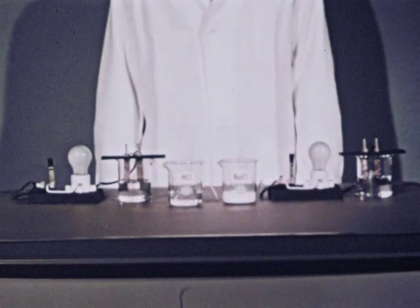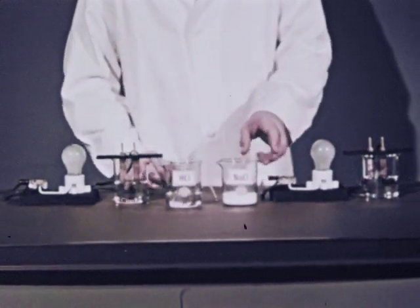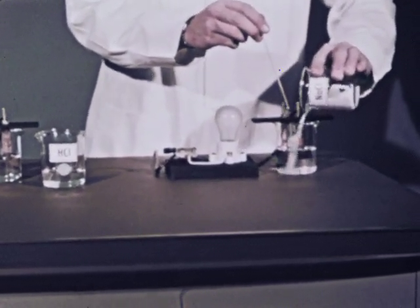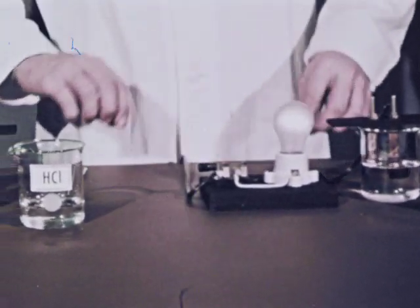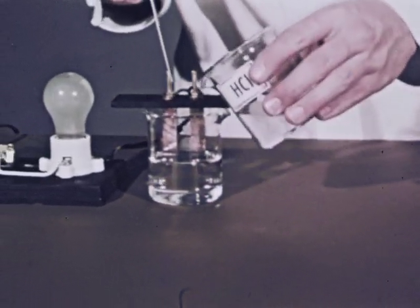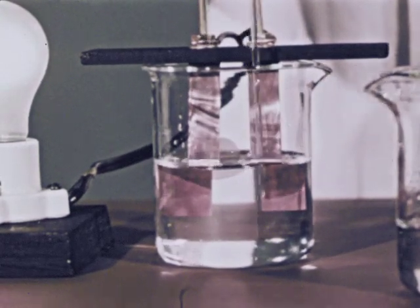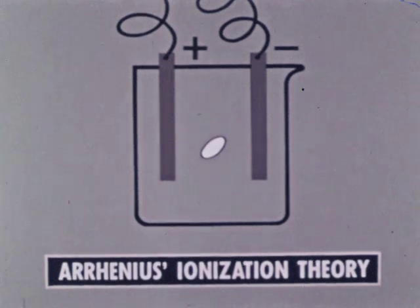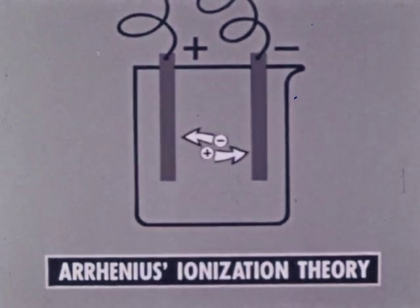Arrhenius knew that pure water was a poor conductor of electricity. Yet when certain substances were dissolved in water, these liquid solutions would conduct an electric current. Arrhenius proposed this explanation: when molecules of certain substances dissolve in solution, they dissociate or separate into smaller charged particles, or ions, which carry the current. According to Arrhenius' theory, a molecule in solution would dissociate into positive and negative ions, which would be attracted to oppositely charged poles.